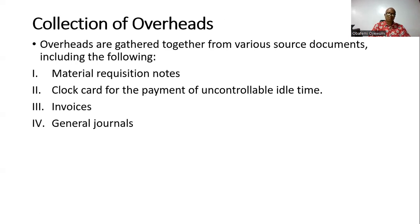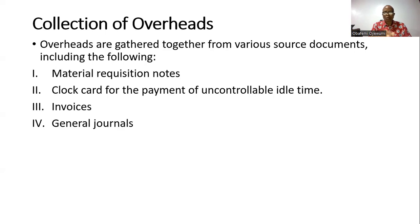So let's move on to collection. How do we collect overhead? How do we know the amount to be taken as overheads? Number one, we talk about material requisition notes — notes that are raised for the purpose of bringing out materials from the stock. When it comes to indirect materials, we go to material requisition notes which have been generated and kept in the store. The second one is clock cards, specifically for indirect labor, and invoices for other supplies for producing goods in the factory. And general journals have to do with expenses related to passage of time — such as rent and insurance.